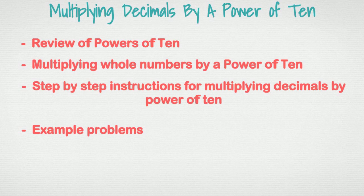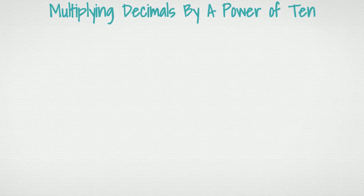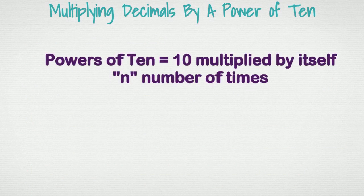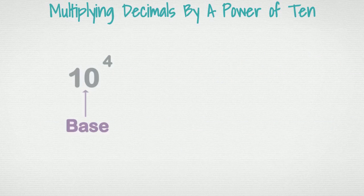So real quick, let's review some stuff before we move forward. A power of ten is basically the number ten multiplied by itself a certain number of times, or it's the repeated multiplication of the number ten. We can write that in exponential form by showing ten as the base and the index as being the number of times that ten is multiplied by itself.